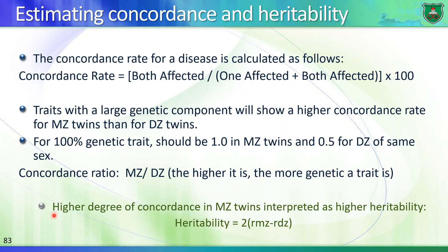Heritability H can be calculated using the equation: H = 2 × (concordance in monozygotic twins − concordance in dizygotic twins). The higher the number, the larger the degree of heritability. You can find heritability values for certain conditions in your textbook on page 146.